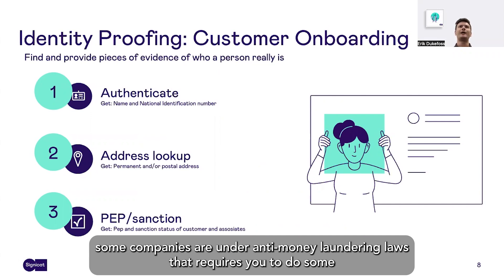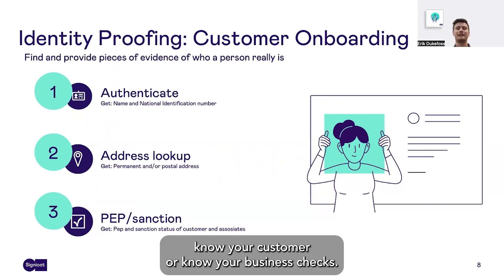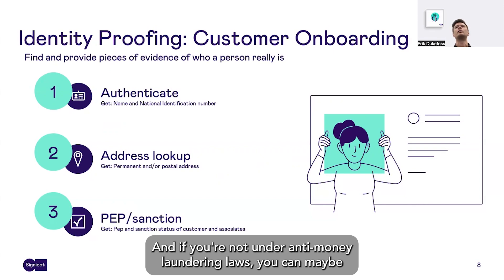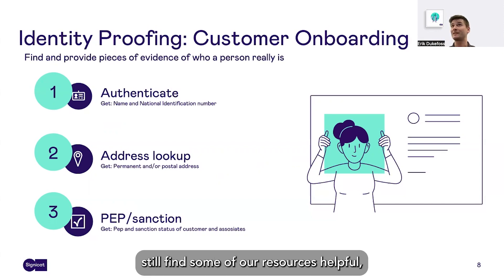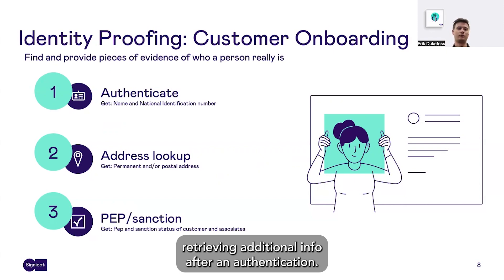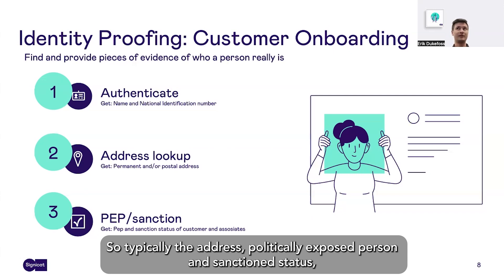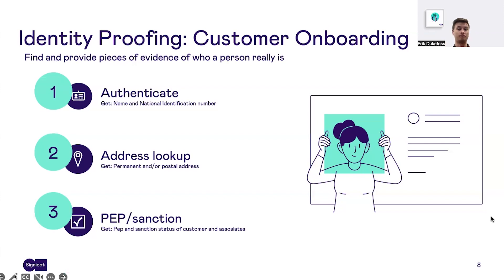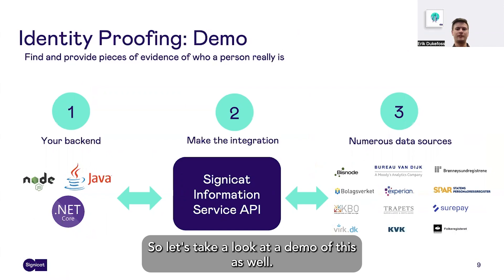Some companies are under anti-money laundering laws that require you to do some know your customer or know your business checks. We have the resources ready to do that. And if you're not under anti-money laundering laws, you can still find some of our resources helpful, as I will show you on the next slide. A typical anti-money laundering process involves retrieving additional info after an authentication — typically the address, politically exposed person, and sanctioned status. What you need is dependent on national anti-money laundering laws, so you can check that out for your market. Let's take a look at a demo of this as well.